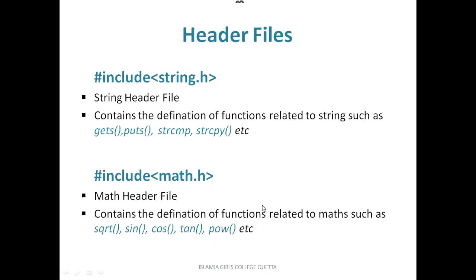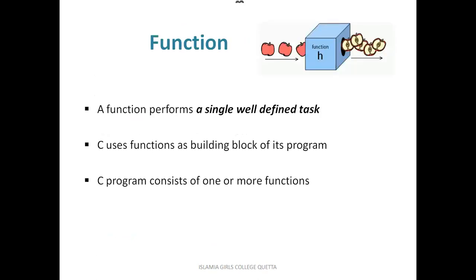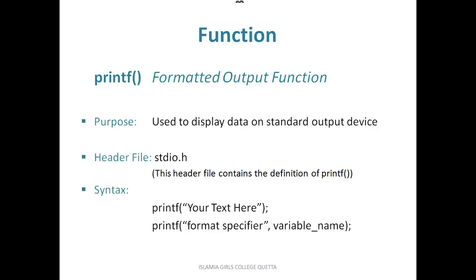So those were some header files, which is the first part of our lecture today. Now we will move towards the second part: functions. While discussing header files, we were talking about functions. So what is a function in C language? A function is a piece of code that performs a single well-defined task — it performs one particular operation. C uses functions as the building blocks of its program, and a C program is built up mostly of functions, with more than one function performing specific operations.